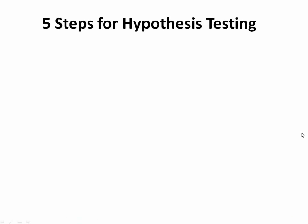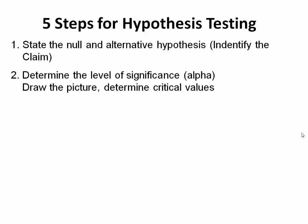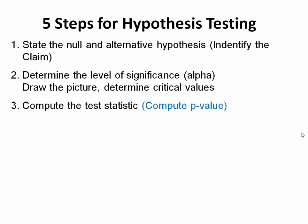In this last presentation, we're going to review five steps for hypothesis testing. In step one, we state the null and alternative hypothesis while identifying the claim. In step two, we determine the level of significance alpha, we draw the picture, and we determine critical values. In step three, we compute the test statistic.